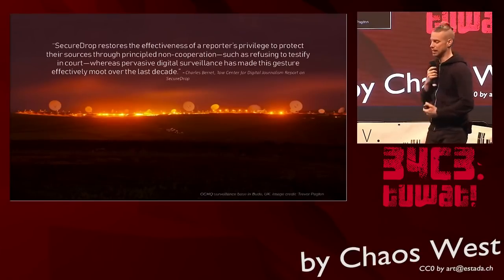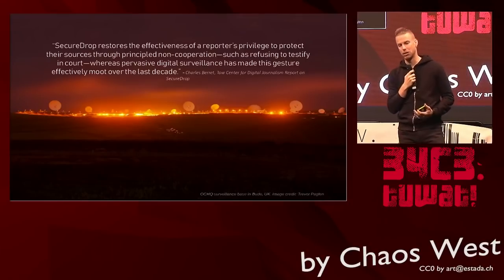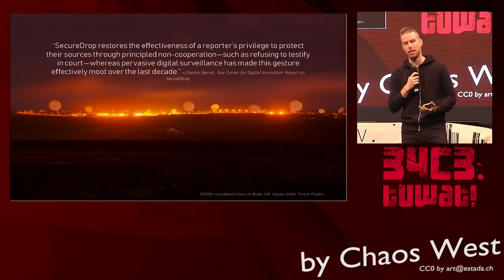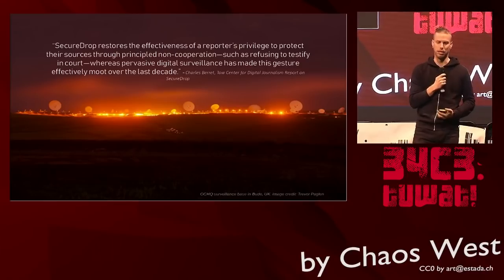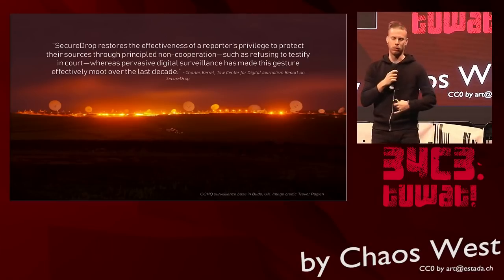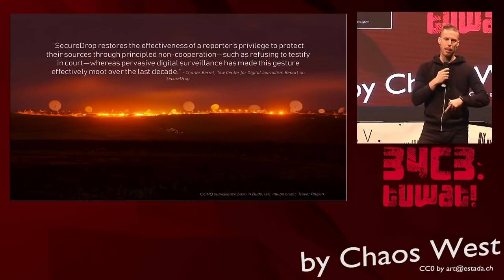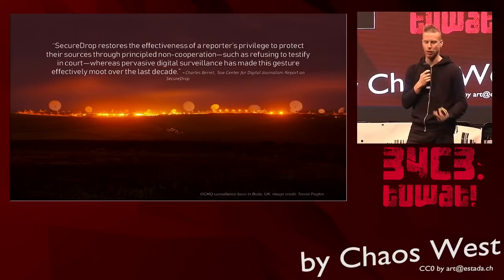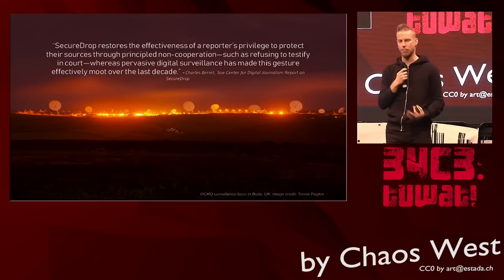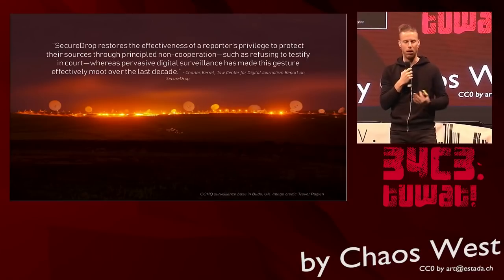SecureDrop restores the possibility for journalists to protect the anonymity of their sources through non-compliance. We have an architecture that primarily relies on using the Tor network to anonymize metadata. We encrypt the data as it transits to and from the servers and on the servers, and we aim to minimize anything we log on the servers — such as Apache access logs, timestamps on files, or user IDs.